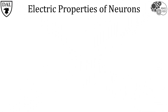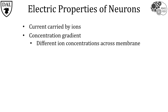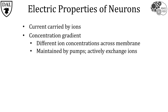Neurons are different than most other cell types because they can transmit electrical signals along their membranes. Electrical current in neurons is carried by ions, which are particles that carry a positive or negative charge. Each ion has a concentration gradient, meaning that ion may have different concentrations on each side of the neuronal cell membrane. The difference in ion concentrations is made possible by ion pumps, which use energy to maintain the unequal distribution of ions on either side of the membrane.